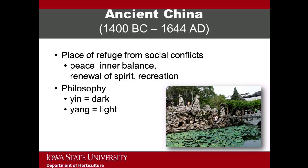The earliest records of Chinese gardens date from 1400 BC. Some of the common earlier examples are from the Han Dynasty, which was 200 BC to 200 AD. And common later examples are from the Ming Dynasty, which was 1358 to 1644 AD. These are the gardens often referred to as the Suzhou Gardens.